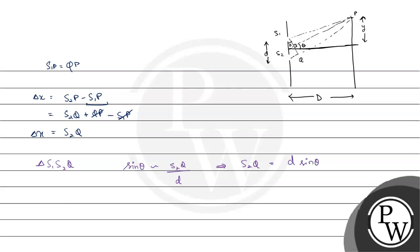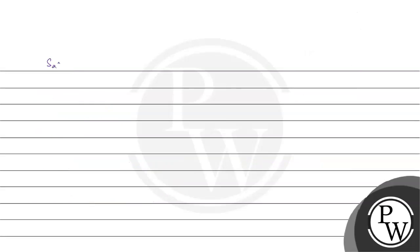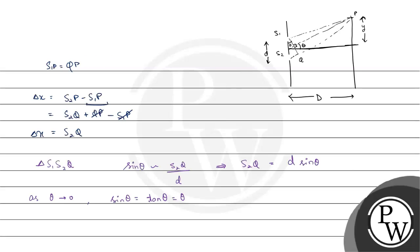Because theta is very small, we can write S2Q equals d tan theta. Now from the triangle formed by S2, Q, and point P — let the foot of the perpendicular be K — the value of tan theta equals Y over capital D.